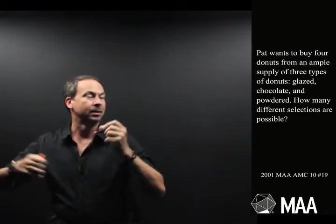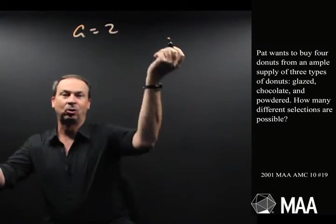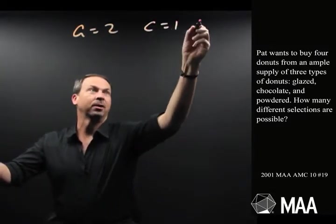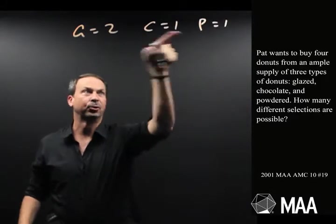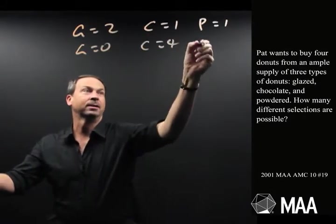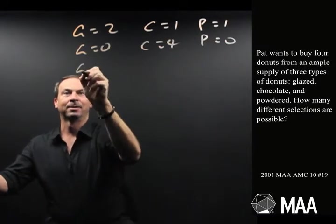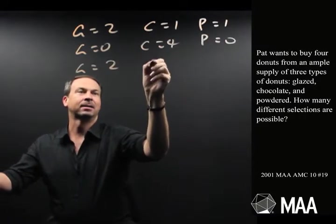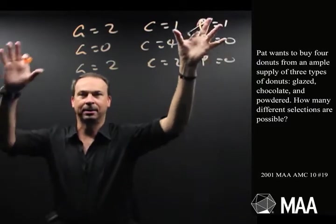Okay, so for example, four doughnuts. Pat could take two glazed doughnuts, one chocolate and one powdered. Four doughnuts like that. Or Pat could do no glazed, four chocolates and no powdered. Or, you know, he could say keep going, two glazed, two chocolates and again no powdered and so on.